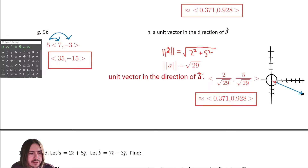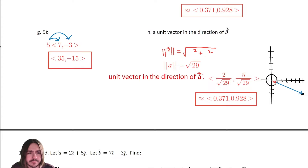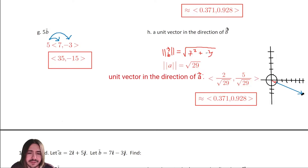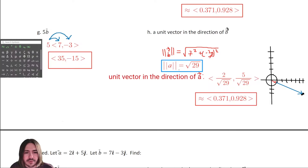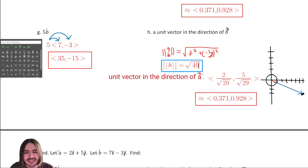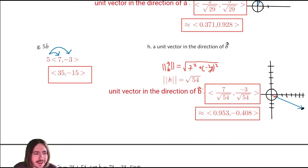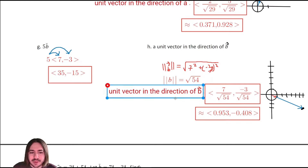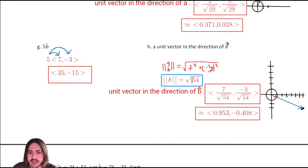Finding the magnitude of vector B: square root of seven squared plus negative three squared. Seven squared is forty-nine and three squared is nine — wait, I need a correction. I initially wrote fifty-four but forty-nine plus nine is fifty-eight, not fifty-four. So the magnitude of vector B is root fifty-eight.